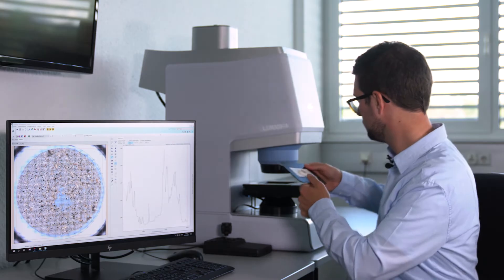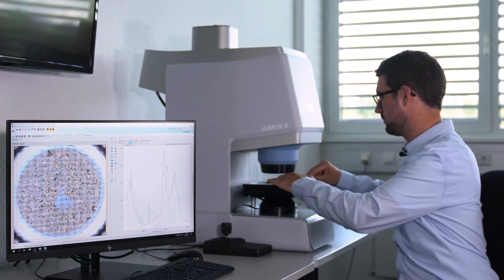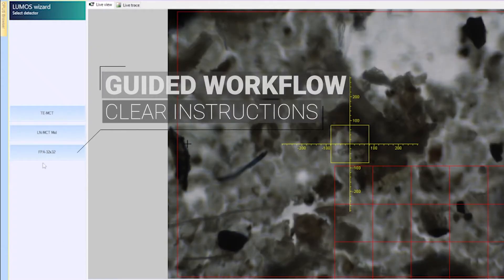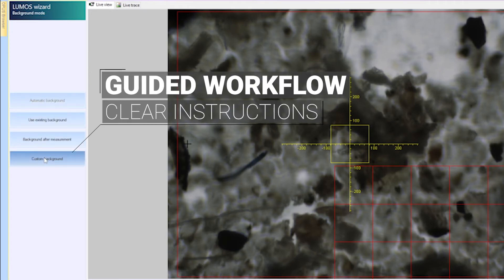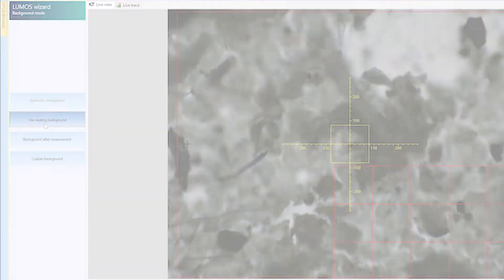The filter mounting is in fact the only manual step involved. Everything else is fully automated. The key to this is Opus, the control center of the Lumos II. Its clean interface guides the users through the analysis every step of the way by setting up the experiment.